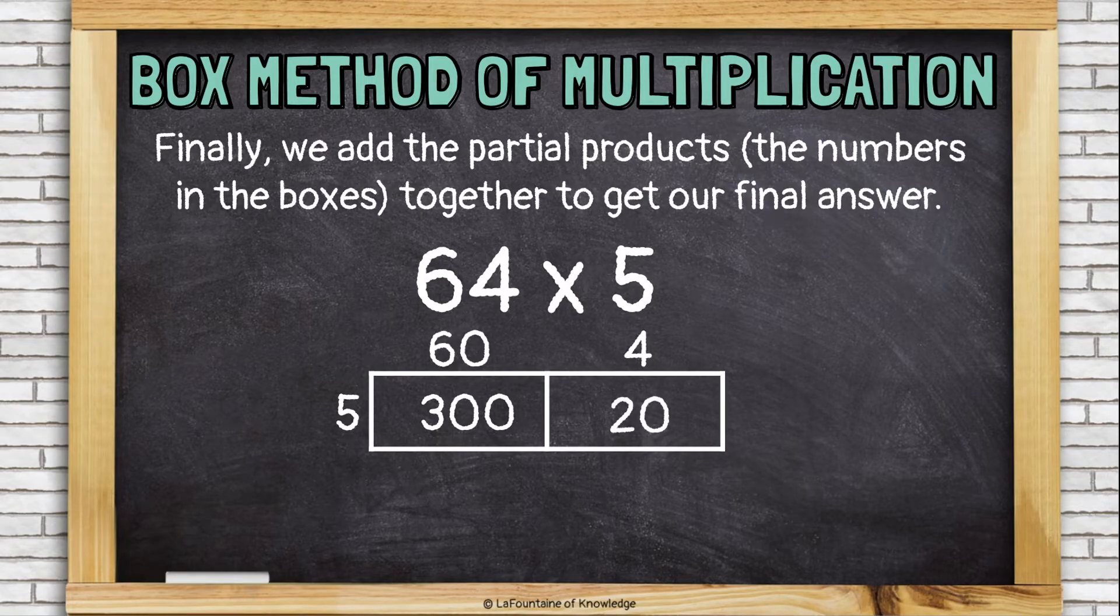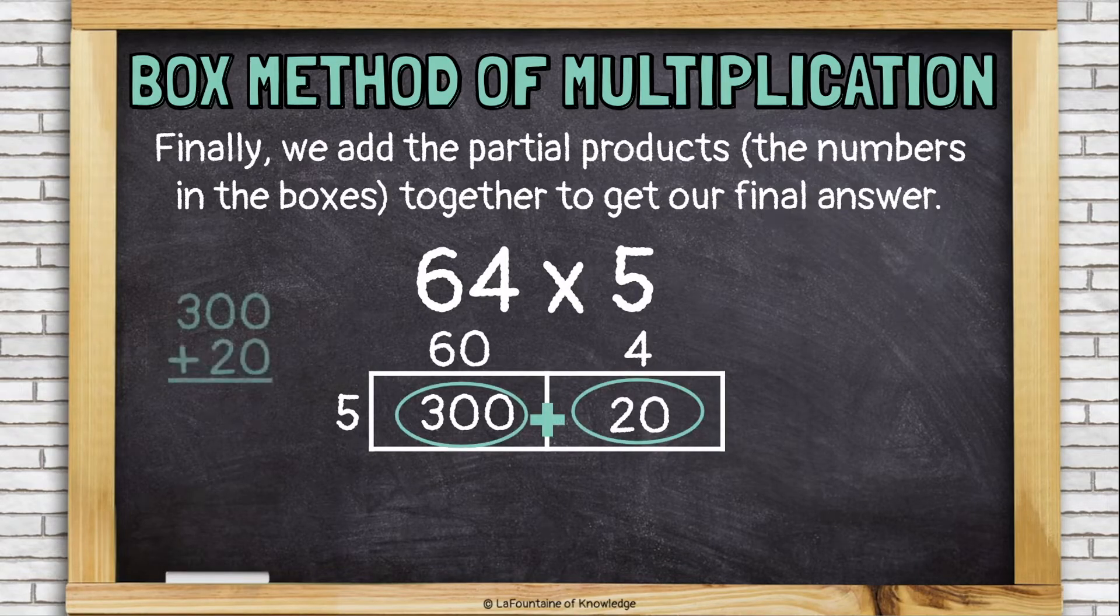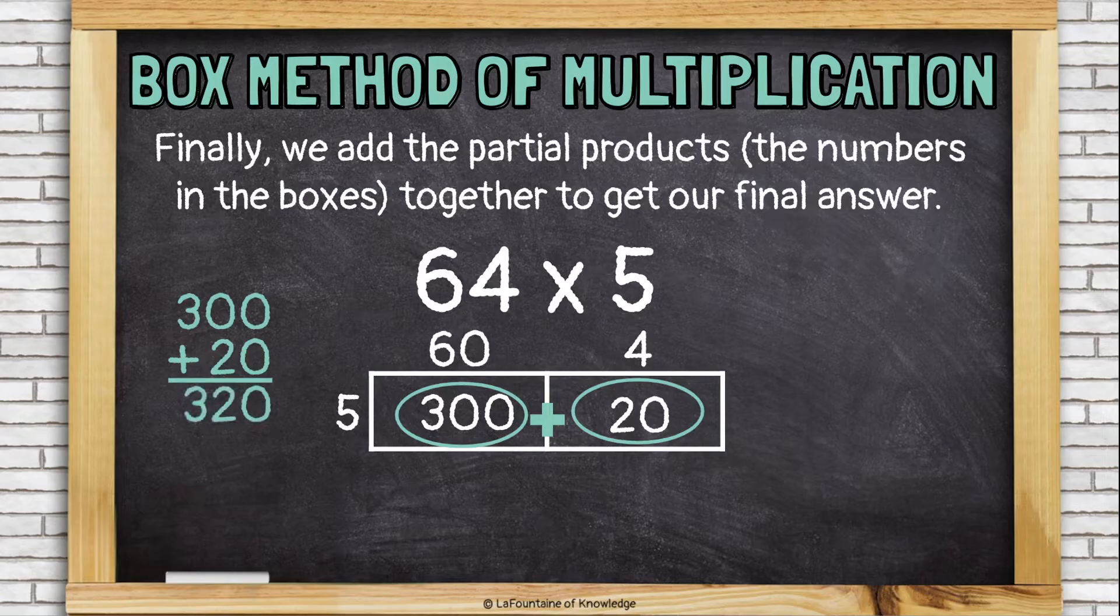Finally, I just add the partial products together, which are the numbers in the boxes. 300 plus 20 is 320, which is the answer to our multiplication problem.